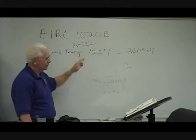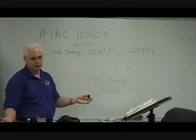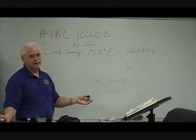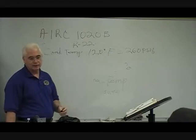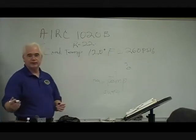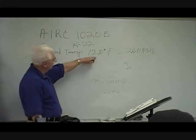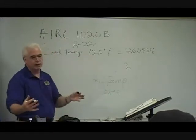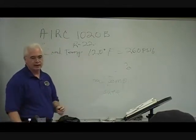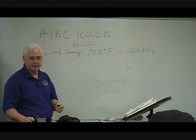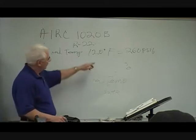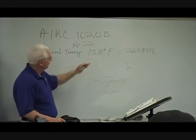You've got 120 degree liquid. Let's say your ambient temperature is 90 to 95 degrees. You've still got a temperature differential, so additional heat from that liquid is going to be given up to that 95 degree air blowing across that condenser. That's your sub-cooling. Where do you measure your sub-cooling?